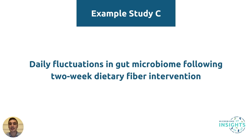Finally, example study C is examining daily fluctuations in gut microbiome following a two-week dietary fiber intervention. Although dietary interventions often change gut microbiome composition, in certain circumstances changes are only evident at a functional level. In this example study, shallow shotgun sequencing would be a powerful approach to assess both compositional differences, such as species or strain changes, and functional differences in the gut microbiome following a dietary intervention at a cost similar to that of 16S rRNA sequencing.